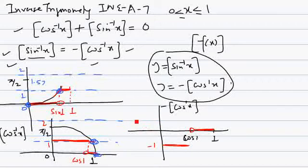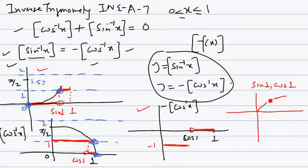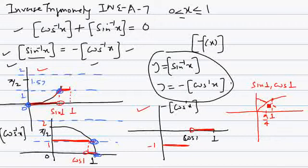Before we can overlap the two graphs, we need to compare sin 1 and cos 1 to see which one is greater. We can figure this out with the graph of sin and cos. They intersect at pi by 4, which is a value less than 1. At x equal to 1, sin is a rising graph and cos is coming down, so cos 1 is less than sin 1.